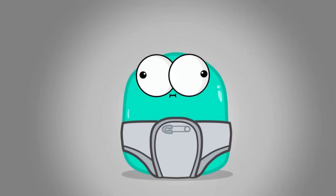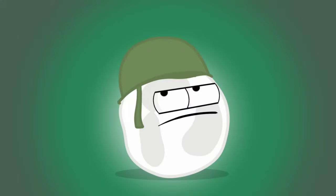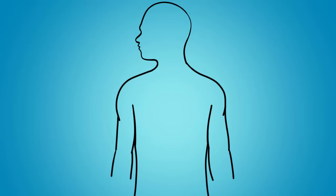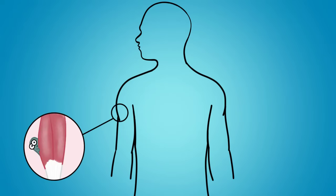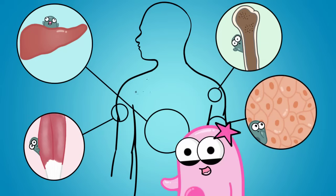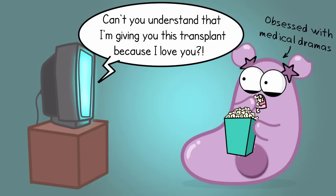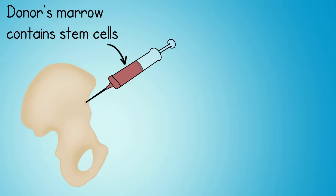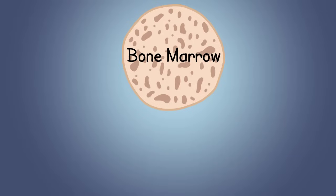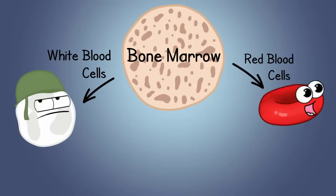Stem cells are the unspecialized, undifferentiated cells that can become other cells in your body. But not all stem cells are found in a developing embryo — stem cells can also be found in your body, like in your muscles, skin, liver, and bone marrow. These are often called somatic stem cells. For example, bone marrow transplants involve transplanting a portion of healthy bone marrow, which contains bone marrow stem cells, with the idea that those donor stem cells can help regenerate different types of blood cells, since bone marrow is like a blood-cell-making machine.